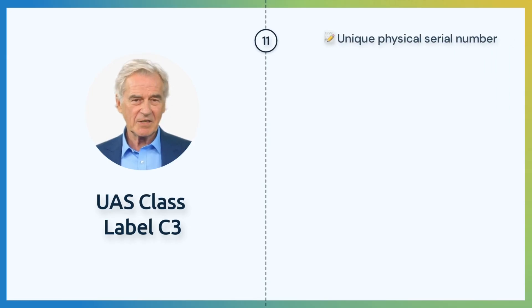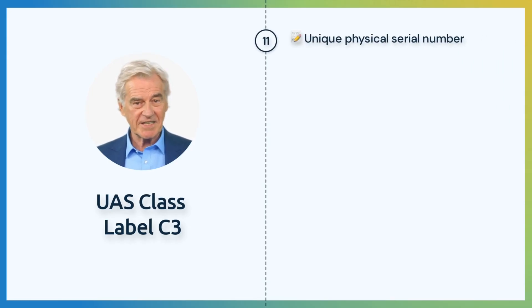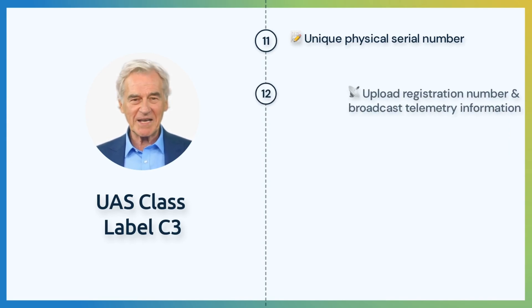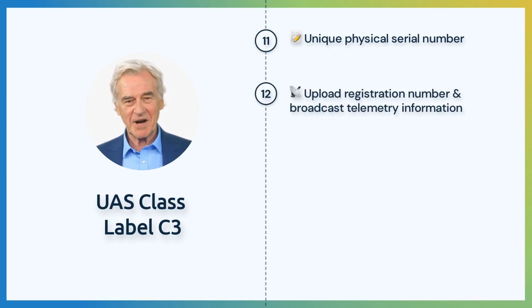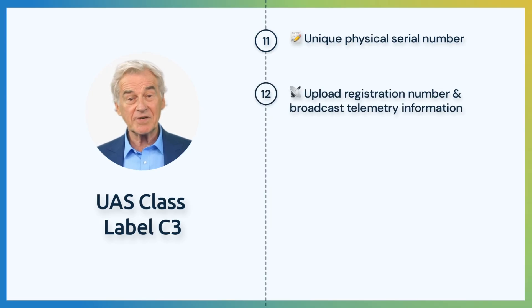The UA shall display a unique physical serial number compliant with CT8-2063. The pilot must be able to upload the operator registration number and broadcast telemetry information.